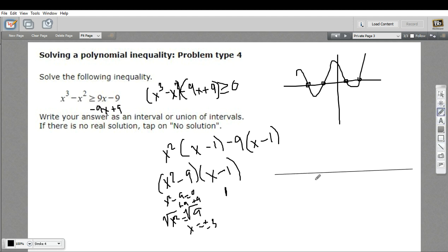So let's go ahead and plot these on a number line. I've got negative 3, I've got 1, and I've got positive 3. So now I've got these four regions that we can test and determine whether the function there is greater than zero or less than zero.